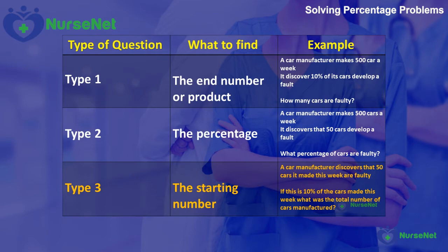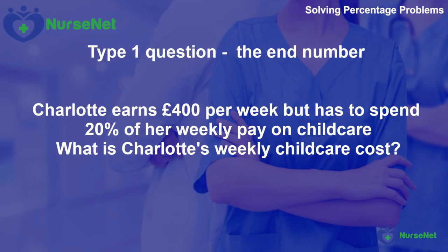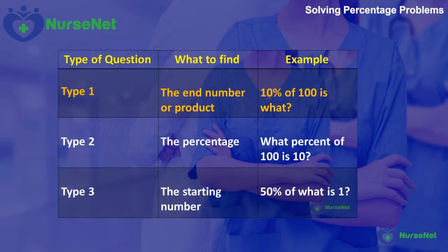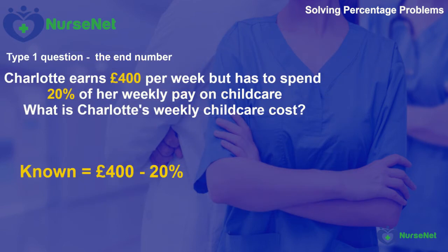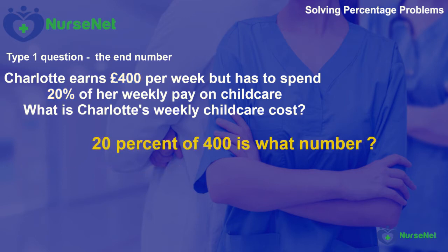Now let's apply this knowledge to answer percentage questions. Charlotte earns £400 per week but has to spend 20% of her weekly salary on childcare. What is Charlotte's weekly childcare cost? This is a Type 1 question where we've been asked to find the end number. We know she's paid £400, but we need to find 20% of this to solve the question — so we need to know what 20% of 400 is.